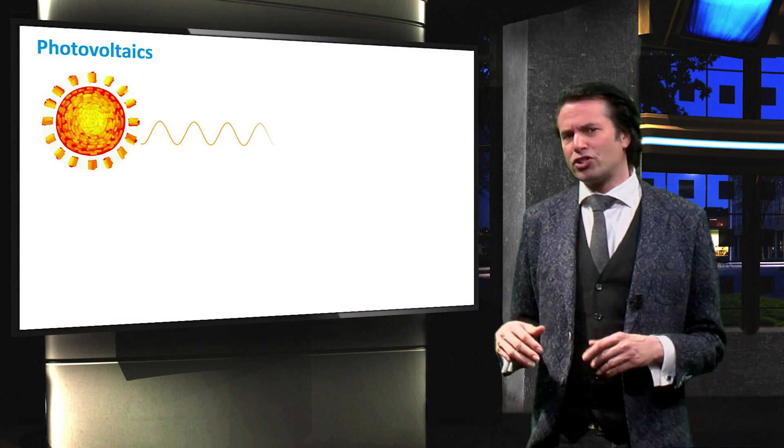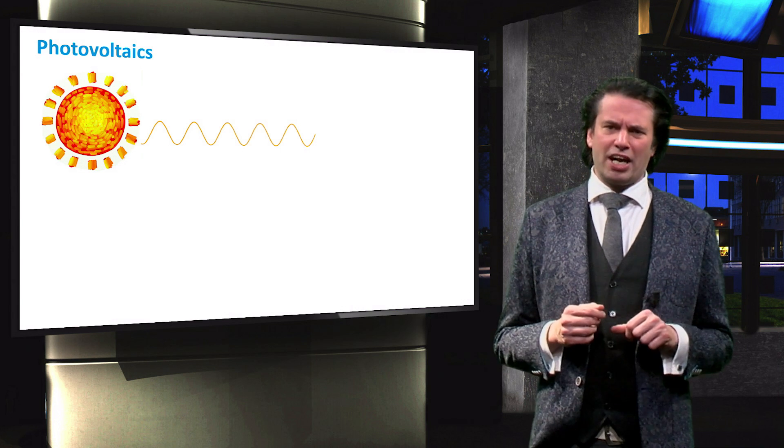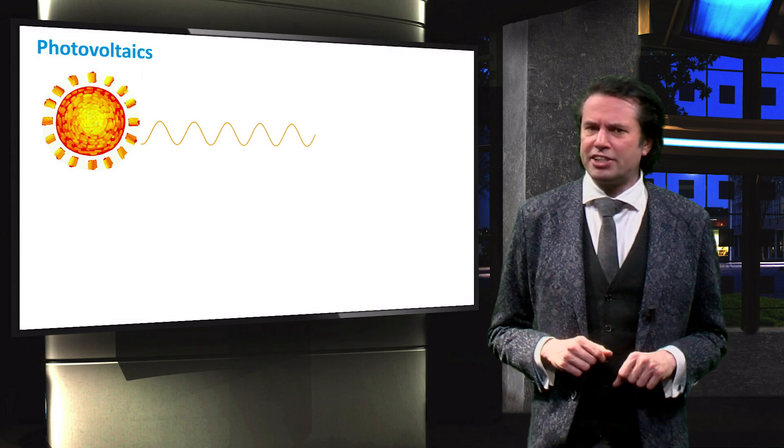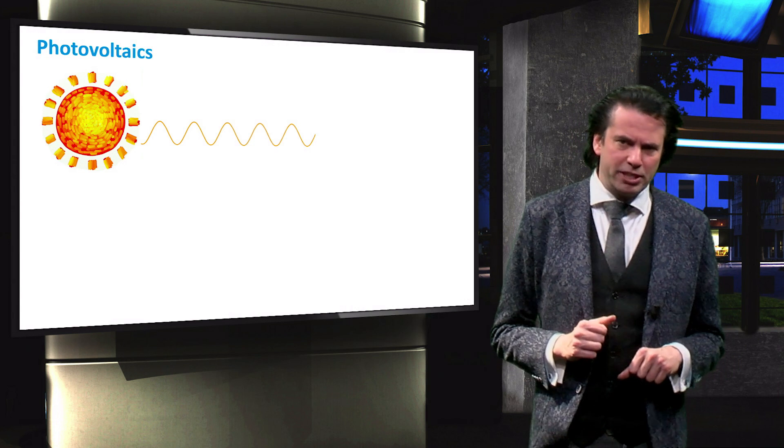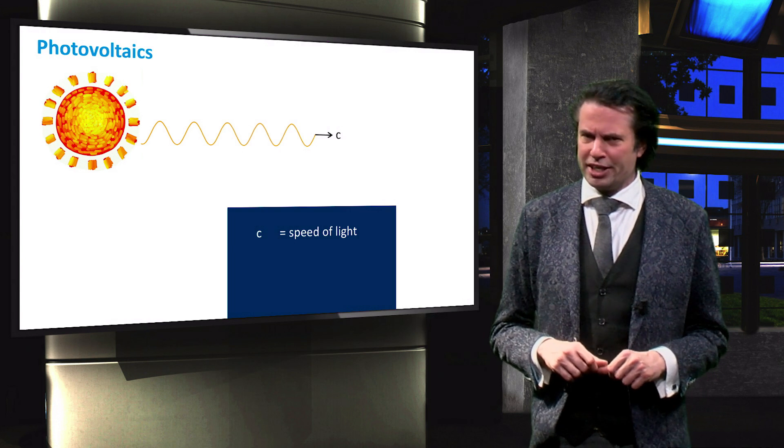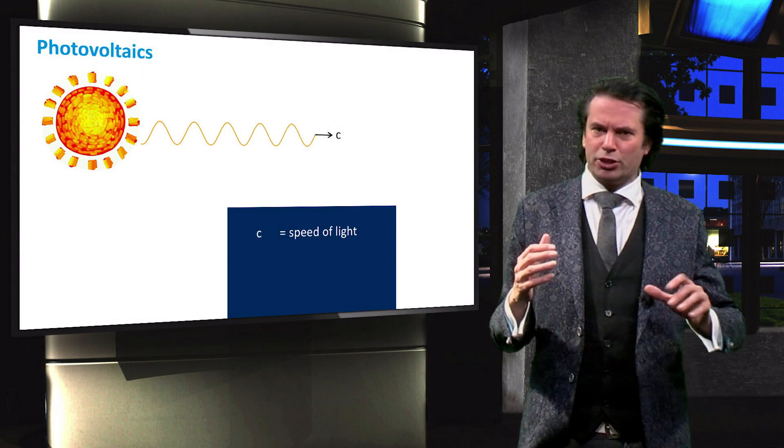As we will discuss later in this course, light is a form of electromagnetic radiation. The properties of this radiation can in some respects best be described by a wave. Such a wave is shown here, propagating at the speed of light.